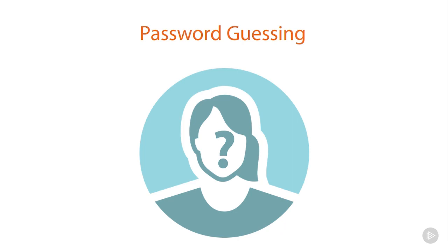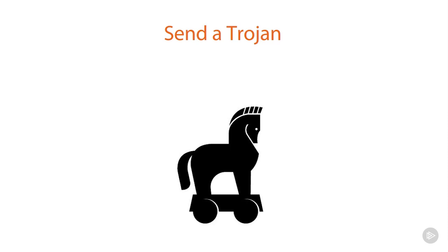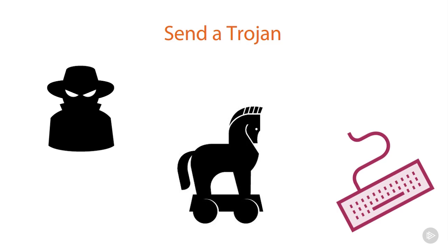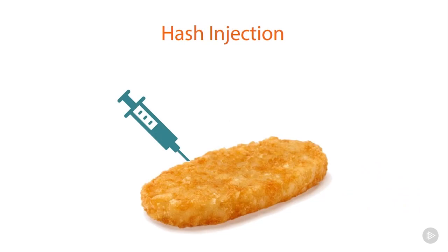If password guessing doesn't work, we get extremely active. We'll start by trying to send a trojan to load up possibly a keylogger program, or even a piece of spyware, that will help me determine what the password is. I might also be able to do something called hash injection, where I take a compromised hashed password and inject it into a local session, using that hash to basically validate my access to the resource — we often refer to this as passing the hash.